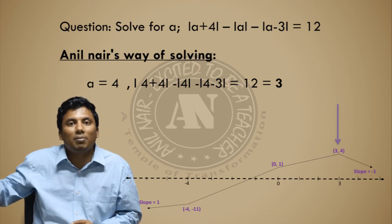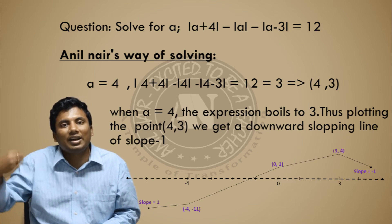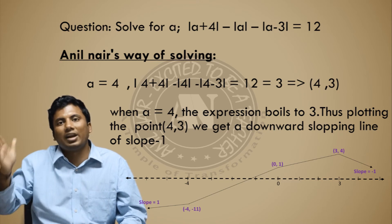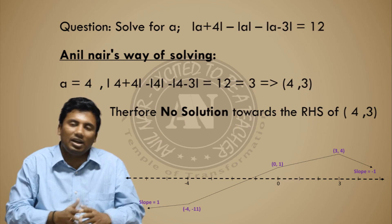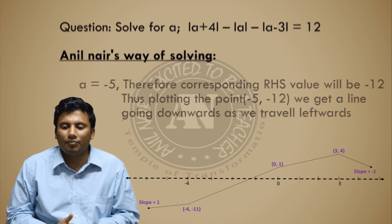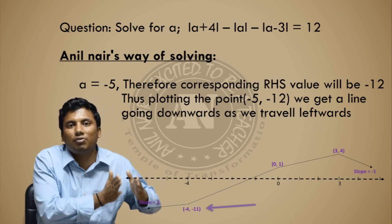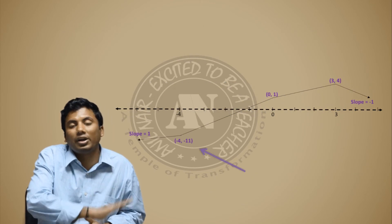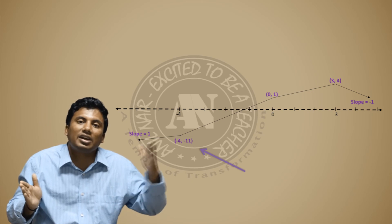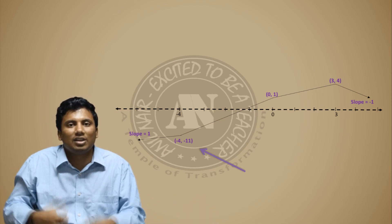Observe carefully: the point (3, 4) is followed by (4, 3), meaning y is decreasing from 4 to 3 and will continue to decrease. Since we require the right-hand side to be 12, y should increase, but here y is decreasing — so there is no solution to the right of (3, 4). Similarly, taking a value less than minus 4, say minus 5, gives a right-hand side of minus 12. Since y is moving away from 12 on both extremes, there is no solution overall. The answer is 0.